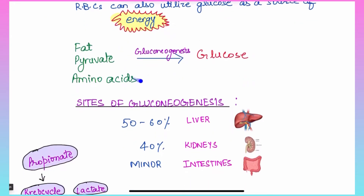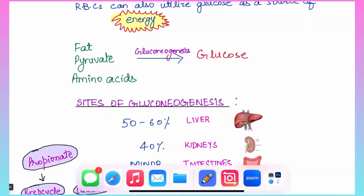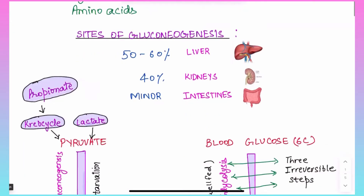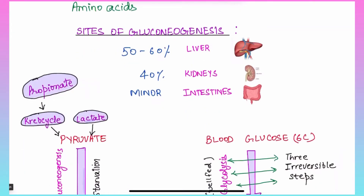Ideally gluconeogenesis is called the reversal of glycolysis, and in this video we will learn whether it's exactly the reversal of glycolysis or not. Fat, pyruvate, and amino acids are the sources of non-carbohydrate precursors which help in conversion to glucose. The sites of gluconeogenesis include 50–60% in liver, 40% in kidneys, and some minor amount in intestines also.